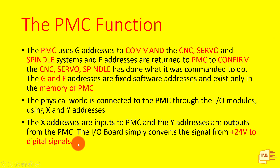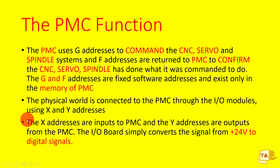PMC uses G addresses to command the CNC, servo, and spindle systems. F addresses are returned to PMC to confirm what was commanded. The G and F addresses are fixed software addresses that exist only in the memory of PMC. You cannot find them in any hardware — for example, X and Y addresses are physical addresses you can find on I/O modules, but G and F signals are fixed software addresses found only in PMC memory.